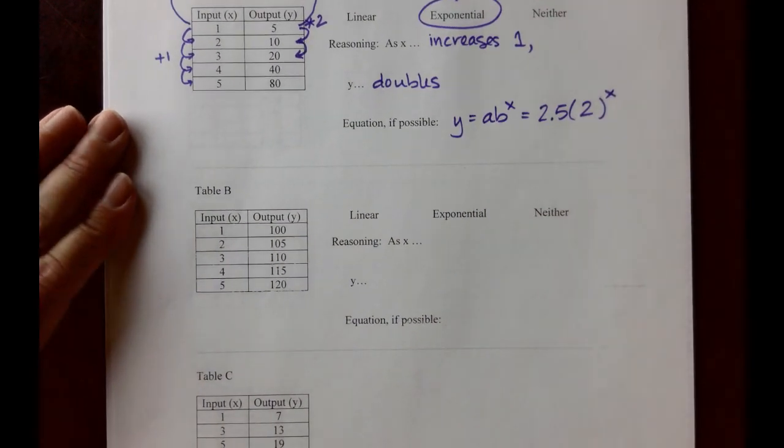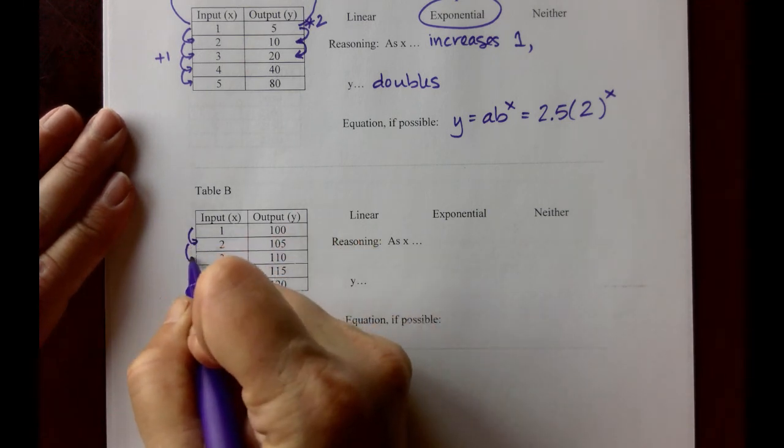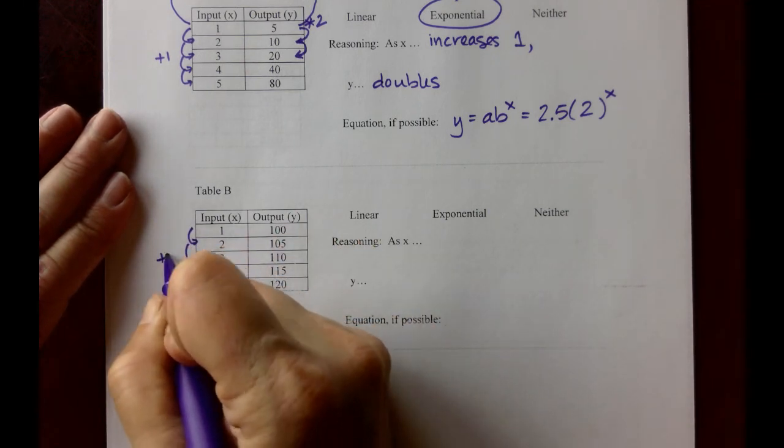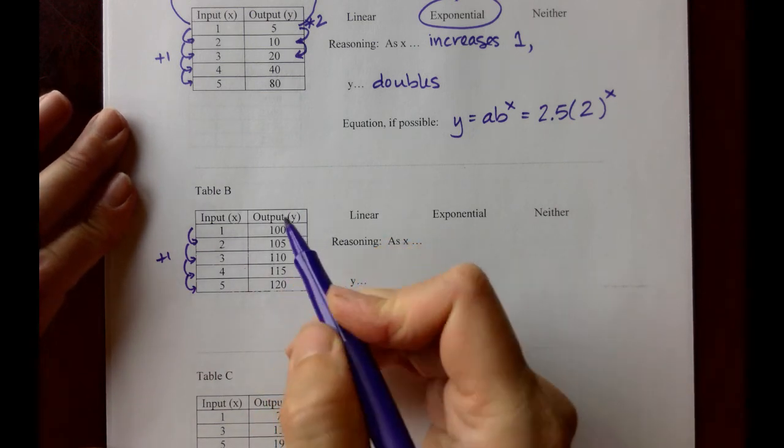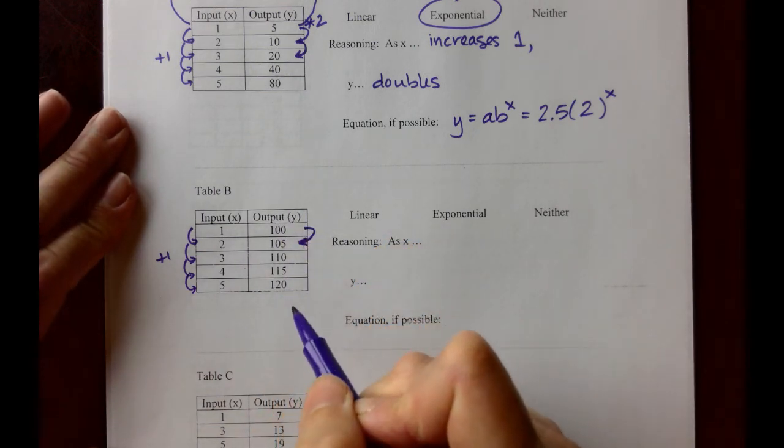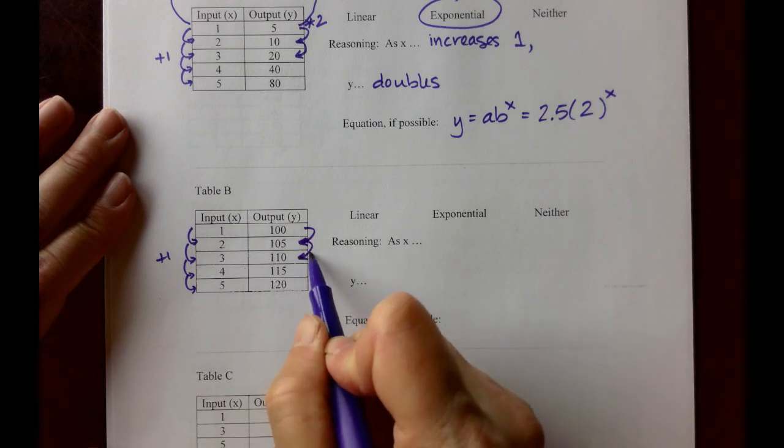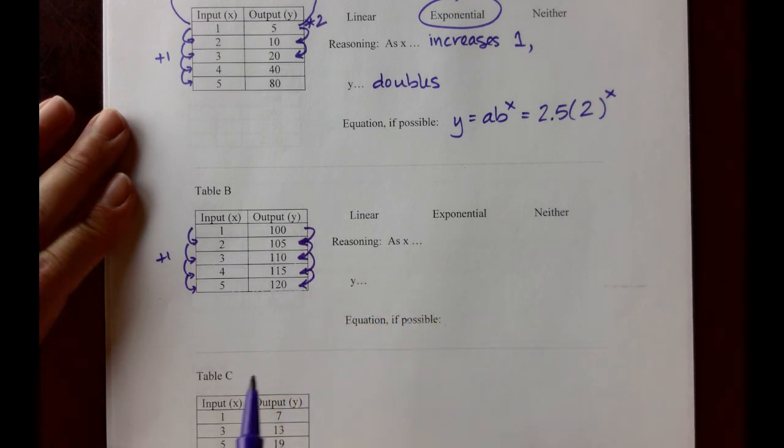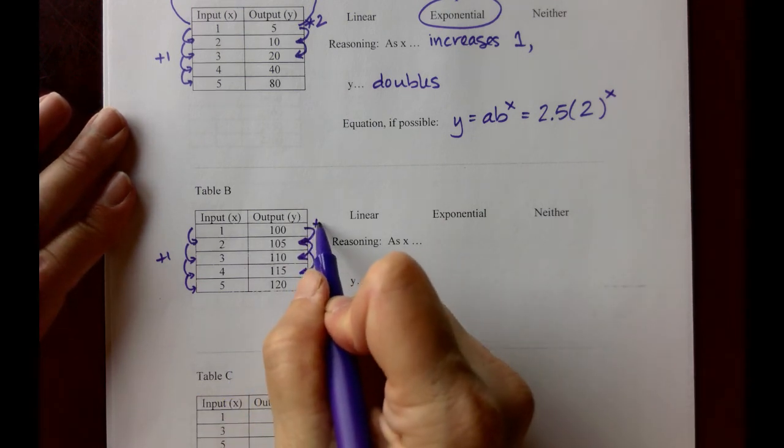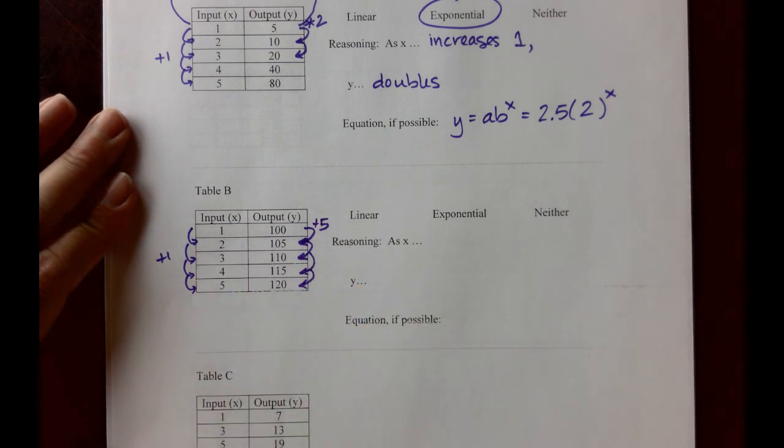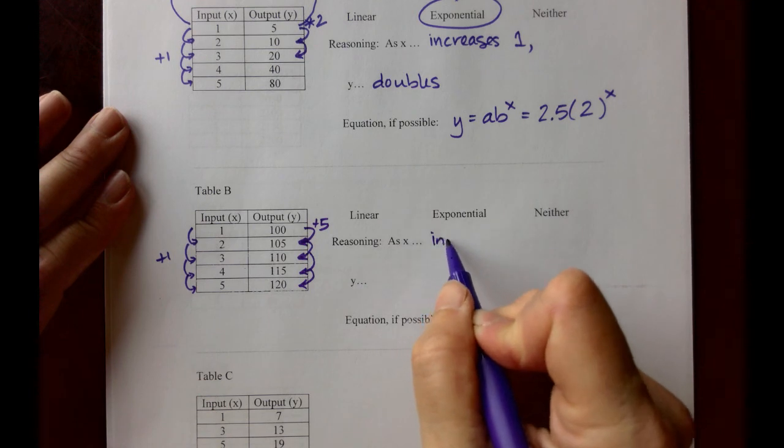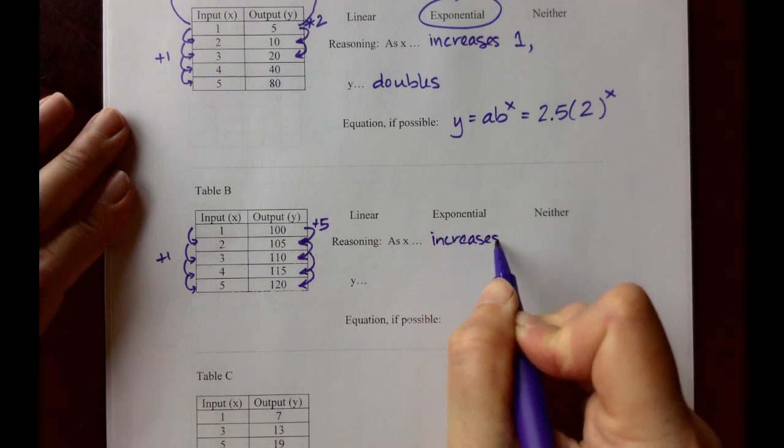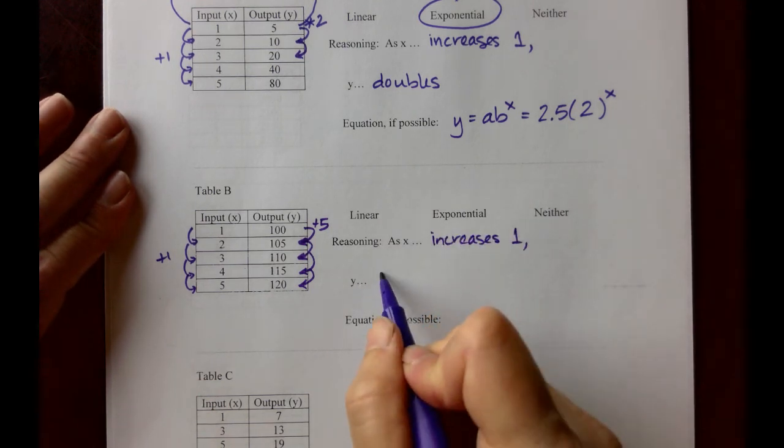Table B. The x's increase by 1 each time. The outputs y start at 100, and they grow to 105, 110, 115, 120. Each of those is an increase of 5. For our reasoning, as x increases 1, y increases 5.